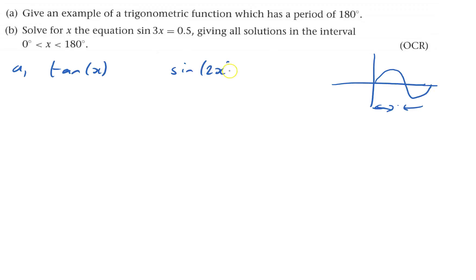So if I have sin of 2x, then that would be now, the period would be 180, because I've squashed it. So I could have that with cos 2x.